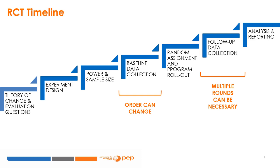After defining the sample size, it is time for baseline data collection — the gathering of information from experimental units before the treatment is assigned. This information will serve as a benchmark to compare post-intervention results. The next step is to randomly assign units to treatment and control groups.